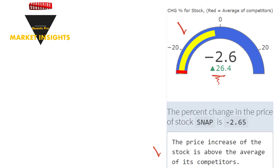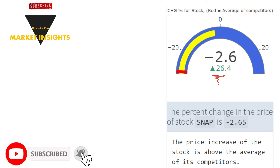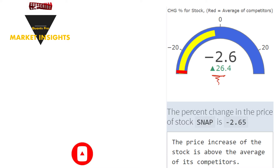If the yellow color exceeds the red, the stock outperformed the average of its competitors. It can be said that the company, which is exposed to market conditions including its competitors, differentiates relatively positively. If red exceeds yellow, the firm's performance is below competitor averages — a situation that involves risks about the future of the stock.